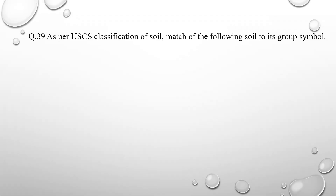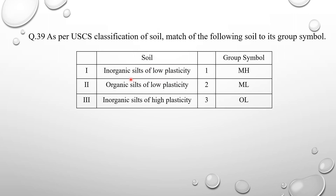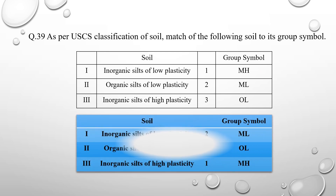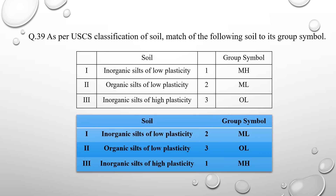Question number 39: as per the USCS classification of soil, match the following soil to its group symbol. For inorganic silt of low plasticity, the group symbol is ML. For organic silt of low plasticity, the symbol is OL, since organic is represented by O. For inorganic silt of high plasticity, the first option is correct. These are the group symbols for the respective soil conditions.